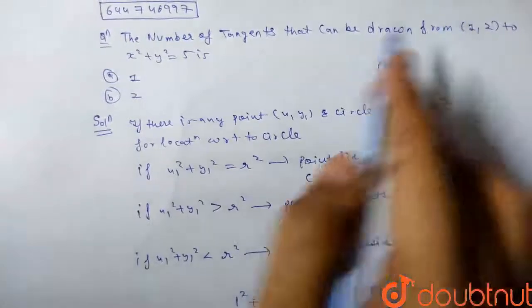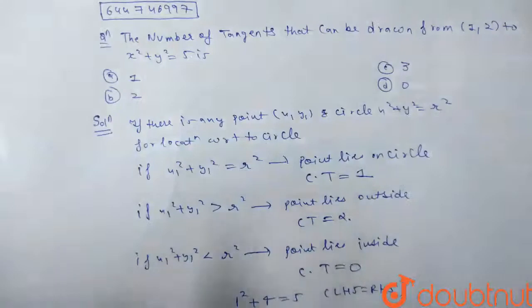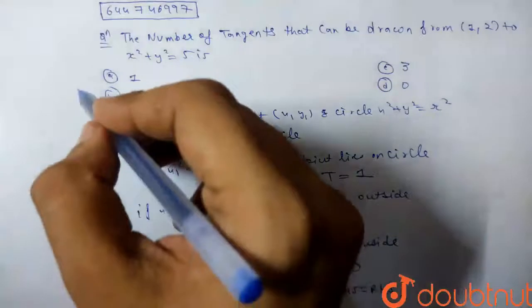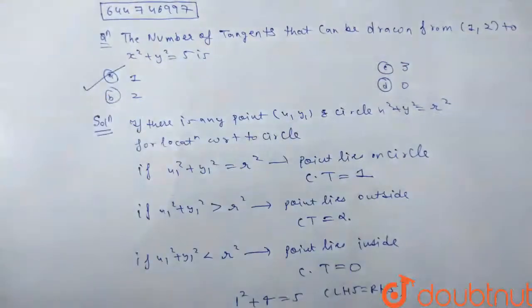the point lies on the circle, so the common tangent is equal to 1, or the number of tangents that can be drawn from the point is 1. Therefore, the option is correct and our question is solved. Thank you!